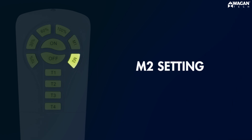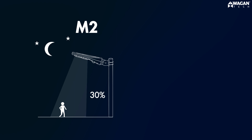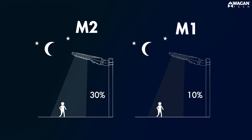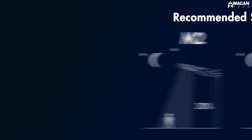The M2 setting is similar to the M1 setting except the constant on brightness is thirty percent instead of M1's ten percent. If you just want to get it up and running, then the M1 and M2 settings are all you'll need.